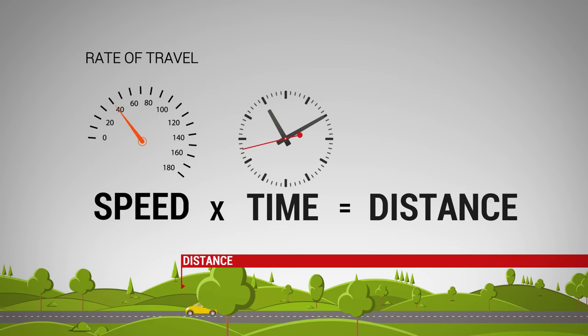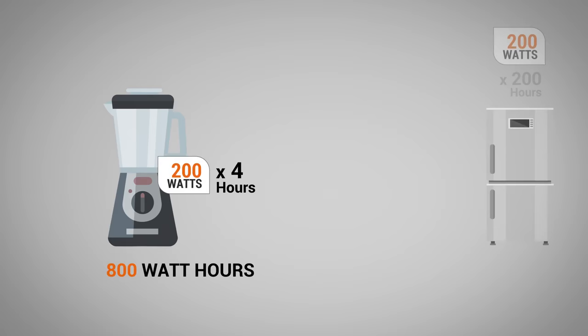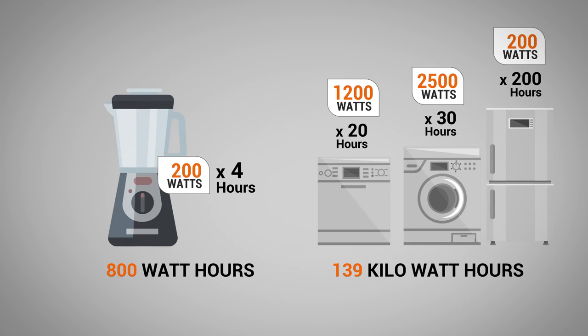Energy is the equivalent of distance in this analogy. To understand how much energy you've used, you need to know how long you've been consuming a specific amount of power — energy is power over some period of time. In small amounts, we measure energy in watt-hours. Energy sized for a household, we measure in thousands of watt-hours, or kilowatt-hours.